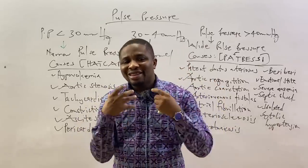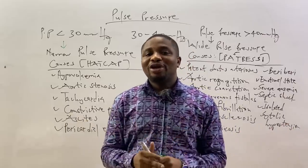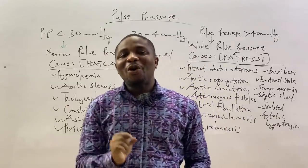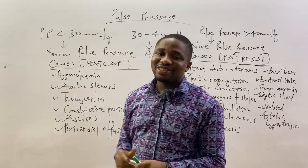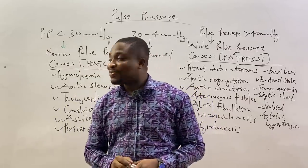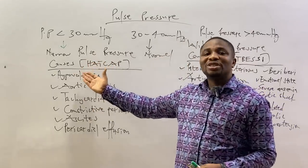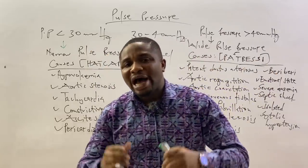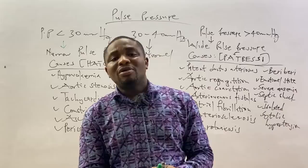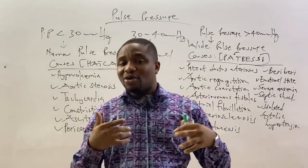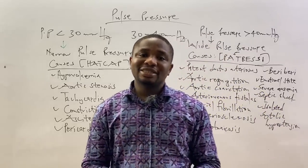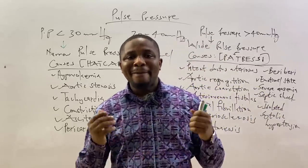For the causes of narrow pulse pressure, I've developed the acronym HAT-TAP. H stands for hypovolemia. A is for aortic stenosis, considered the most common cause of narrow pulse pressure — wherever you see narrow pulse pressure, think of aortic stenosis first. T is tachycardia. Then constrictive pericarditis. A is for ascites. And P is for pericardial effusion.